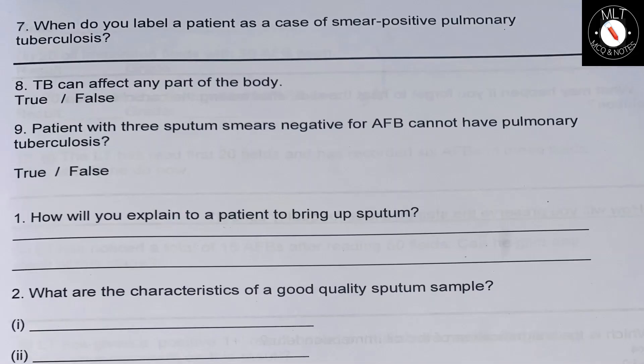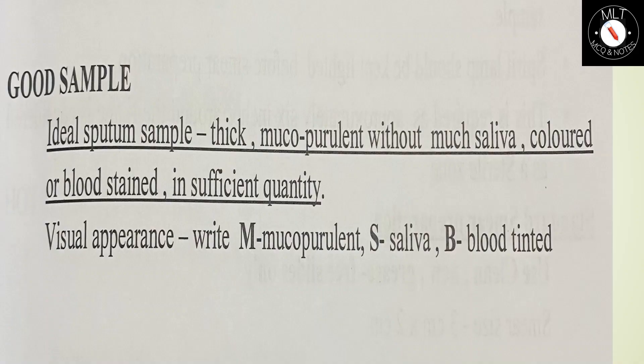What are the characteristics of a good quality sputum sample? An ideal sputum sample is thick, mucopurulent, without much saliva, colored or blood-stained, and in sufficient quantity. The visual appearance should be mucopurulent or blood-tinted.